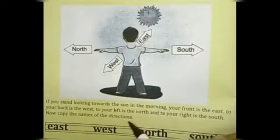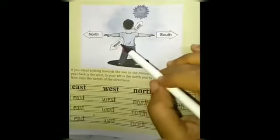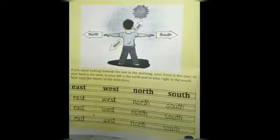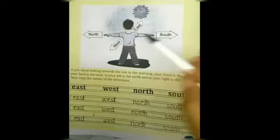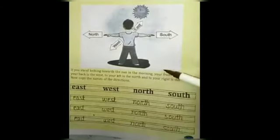Now copy the names of the directions as given. Add the direction labels to the appropriate columns and rows in the worksheet.